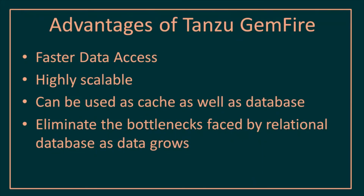Now let's discuss the advantages of Tanzu GemFire. First, we use it for faster data access. Second, it is highly scalable — it can scale up and scale down as per requirements using data partitioning. Third, it can be used as a cache as well as a database; we can configure our servers to persist data to disk. It also eliminates the bottlenecks faced by relational databases as data grows, because we can spin up more servers in the GemFire cluster when data is increasing.